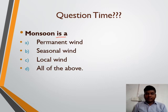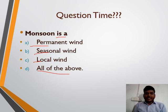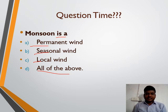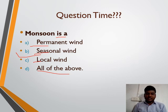Question: monsoon is — permanent wind, seasonal wind, local wind, or all of the above? The correct answer is seasonal wind. Permanent wind includes trade wind, easterly wind, and westerly wind. Monsoon is an example of seasonal wind.